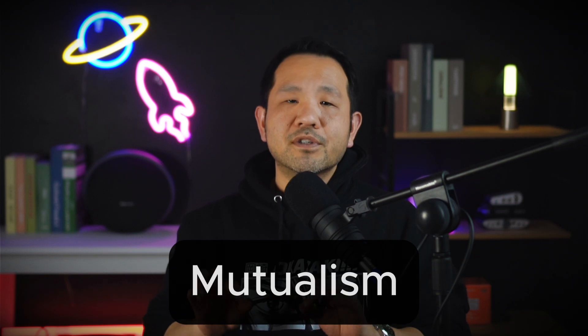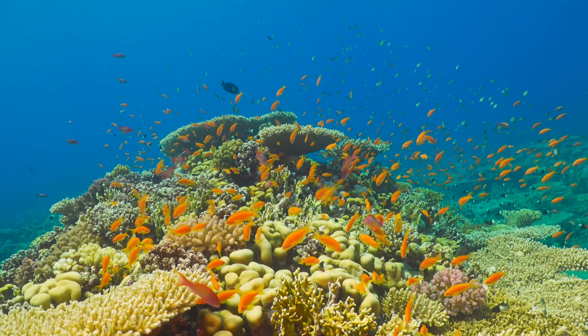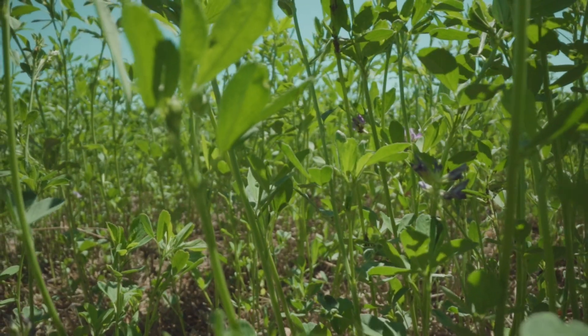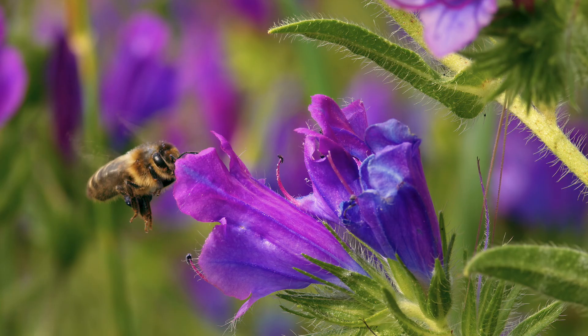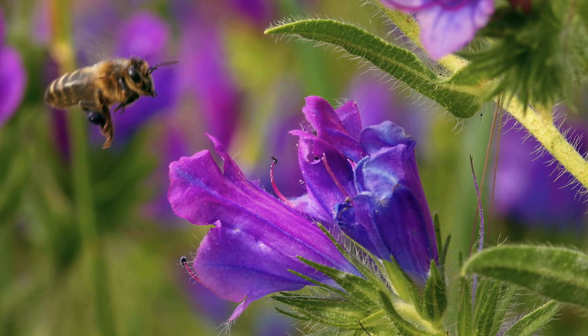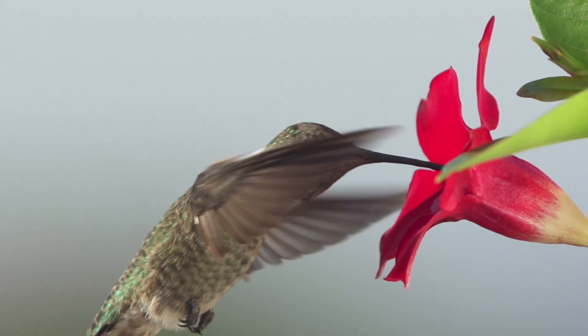In mutualism, we observe a mutually beneficial relationship — a positive-positive interaction between two species. Some major examples common on the exam include corals and algae, as corals provide shelter and nutrients while algae photosynthesize to provide corals with sugars. We also see legumes that develop root nodules which harbor nitrogen-fixing bacteria, providing this limiting nutrient for the plants while receiving sugars in return. Don't forget flowers and their pollinators, which is not only mutualism but a great example of co-evolution, involving both plants and pollinators developing features that match each other specifically.